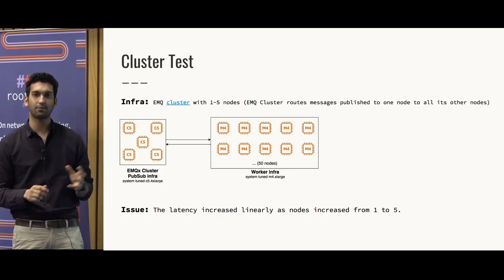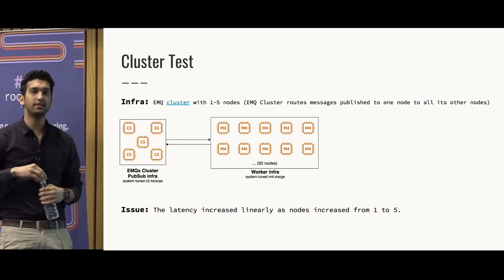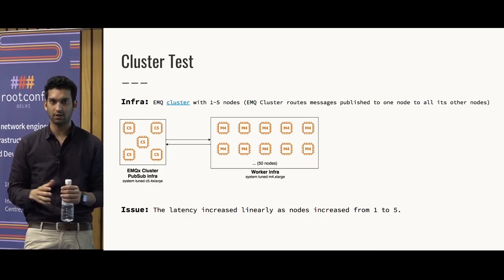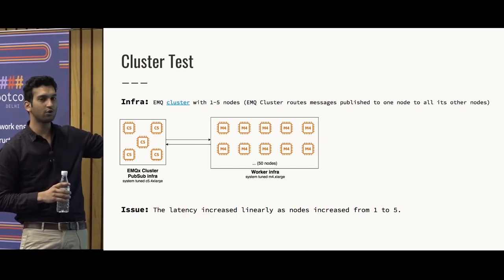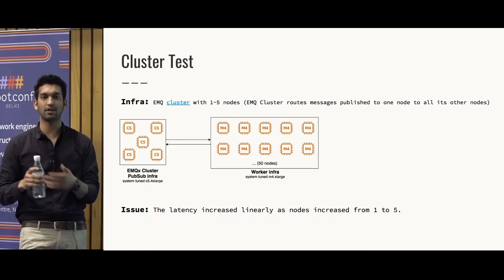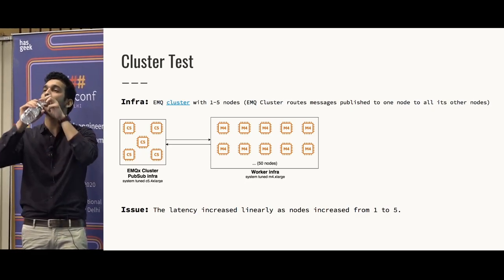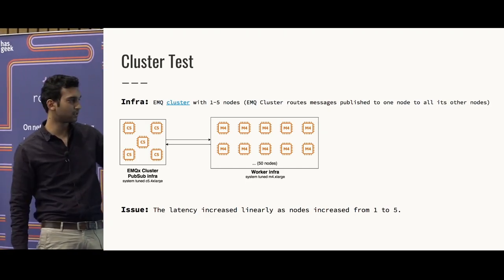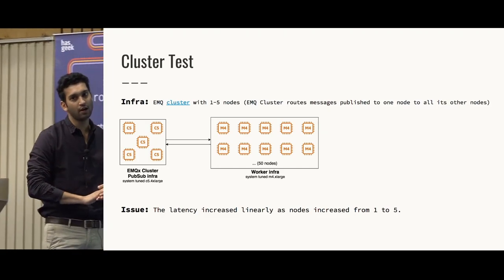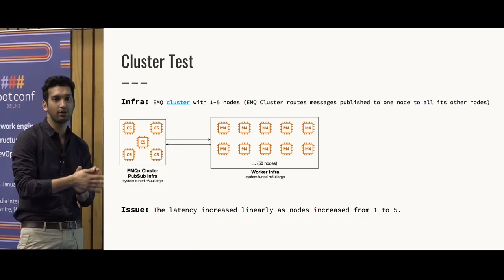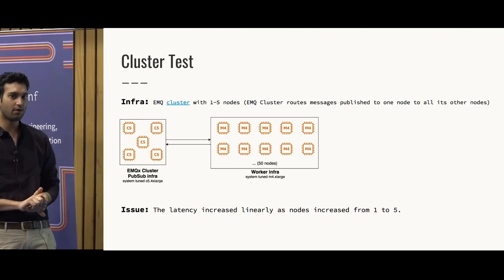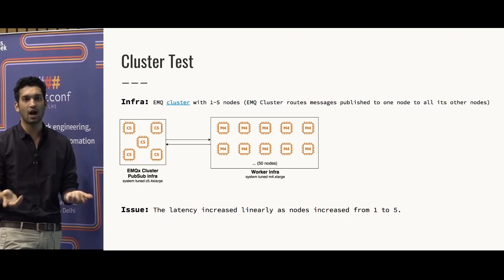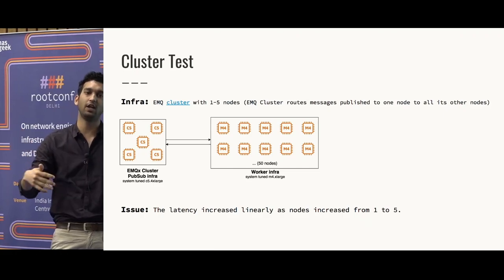For Milestone 2, EMQ has a concept called a cluster. You group nodes together and they handle inter-communication, so you just tell one node to publish a message and it communicates that message to all other nodes. We chose five nodes to start with in a cluster with 15 worker nodes. This didn't really work for us — when we tested the same scenario, latency kept increasing as we increased the number of nodes in the cluster. From two nodes to five nodes, the latency was very different, so we realized this can't scale.